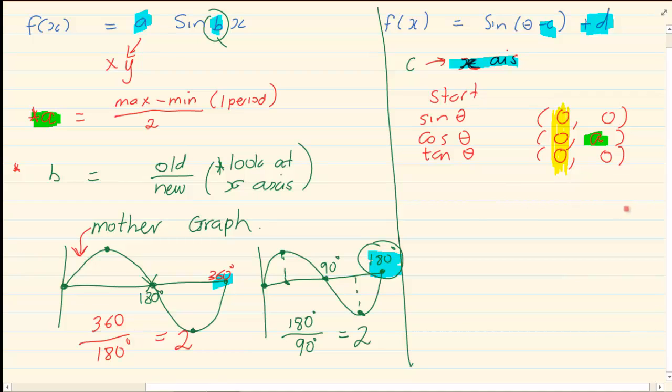But now if I give you a graph and I am giving you a sin graph and you see A. But this thing is starting on minus 30. So what you are going to do is, the starting point is going to substitute into C. So your C now becomes, it should have been on 0, it is starting on minus 30. So this becomes your C.